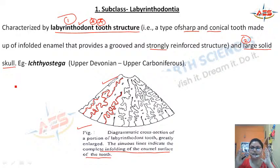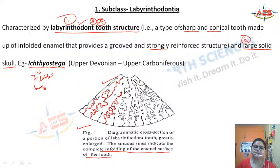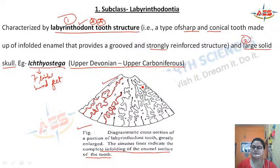The labyrinthodont teeth structure features enfolded enamel layer that makes up a grooved and strong reinforced structure. The skull is large and solid. Example is Ichthyostega — the first amphibian, which had seven limbs in its hind feet. Range is upper Devonian to upper Carboniferous.